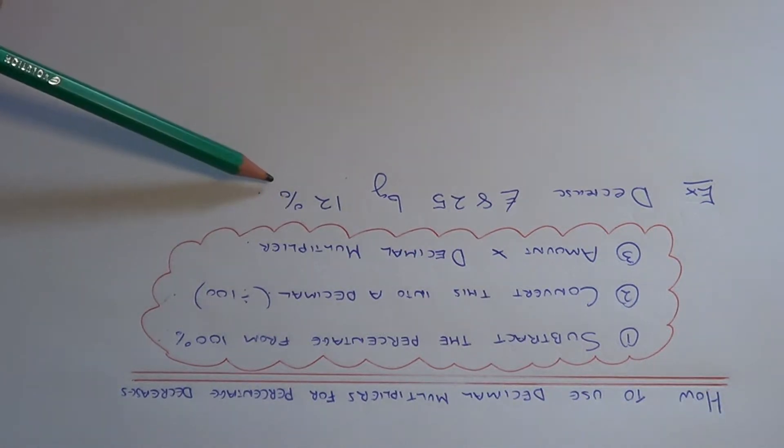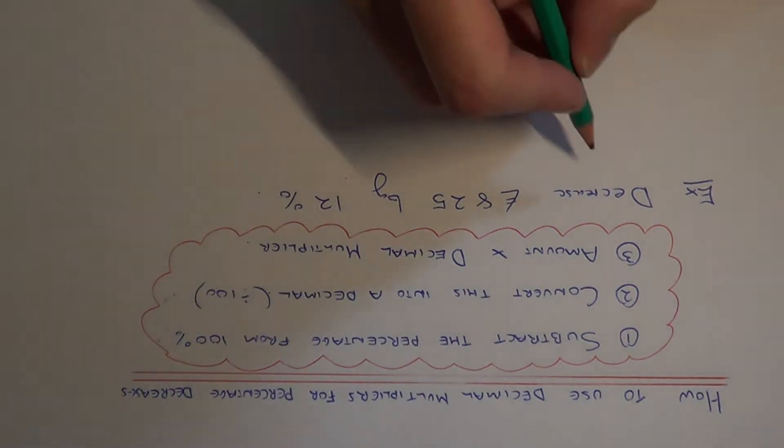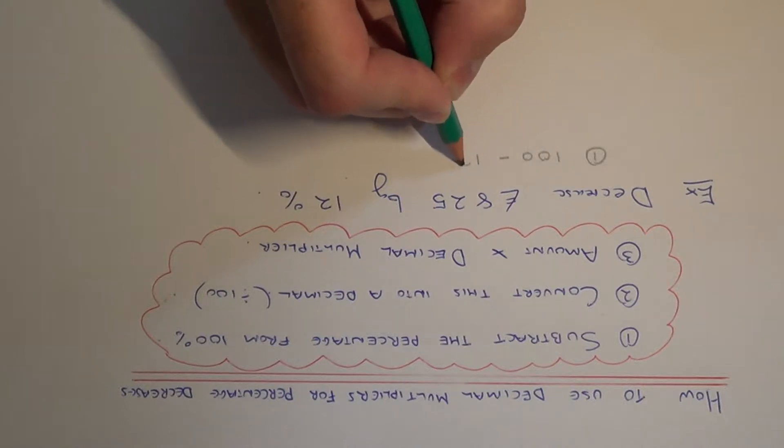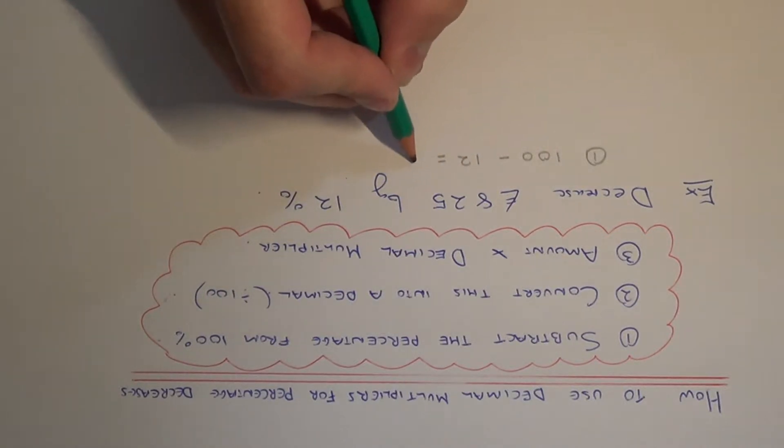So let's have a look at this example. We need to decrease £825 by 12%. First of all we subtract the percentage from 100 and that will give us 88%.